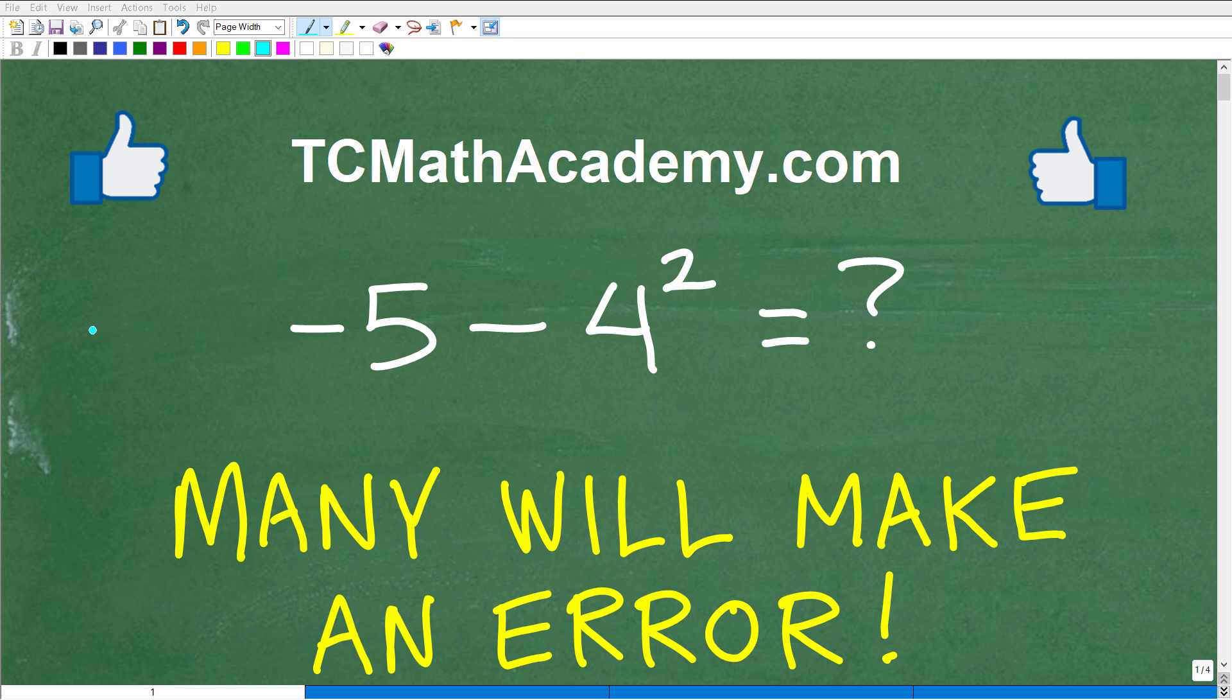Okay, so you might find this very shocking, but a lot of people that are going to try this problem are going to get it wrong. Matter of fact, let me go ahead and read you the problem. It is negative 5 minus 4 squared. What is the answer?